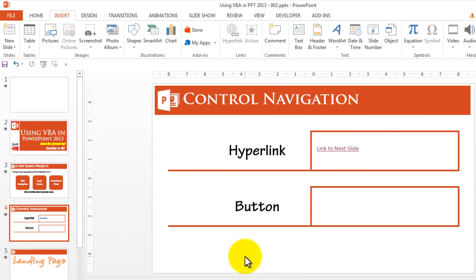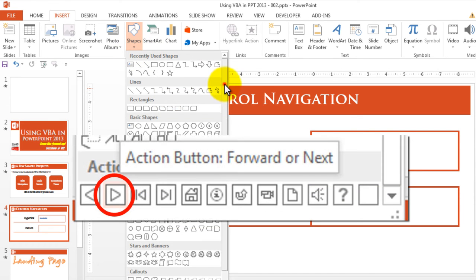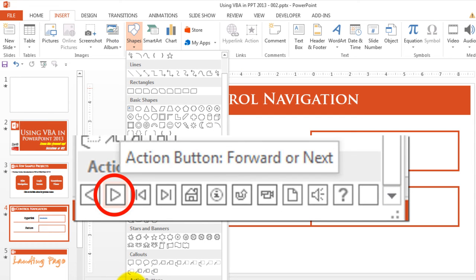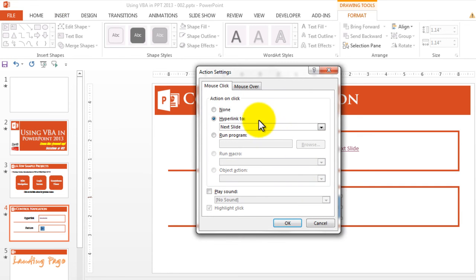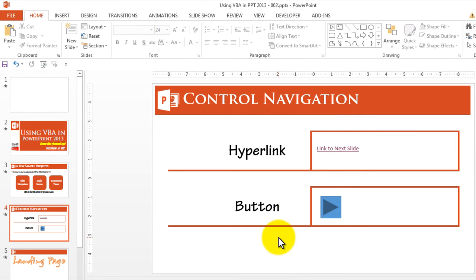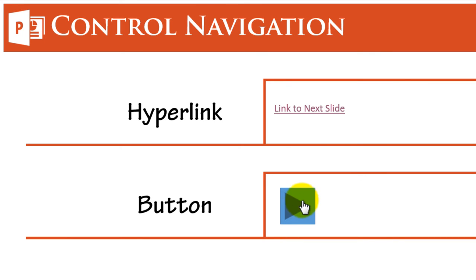Another way to navigate in kiosk mode is to insert a button shape. Go to Shapes, select the button shape, place it on the slide, and it defaults to 'Hyperlink to Next Slide' — click OK. In full screen mode, clicking this button takes you to your chosen slide.